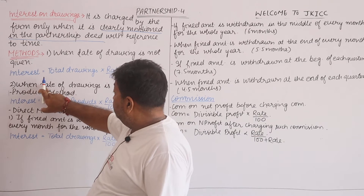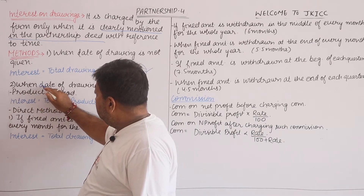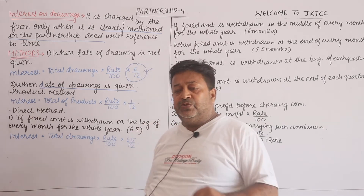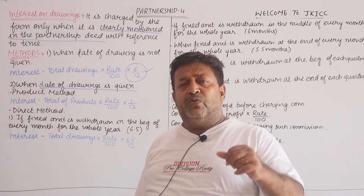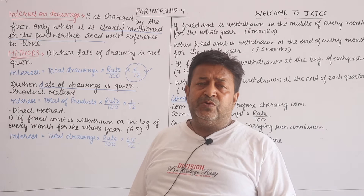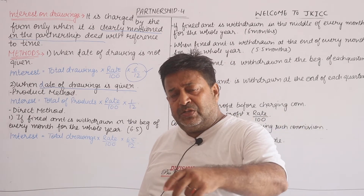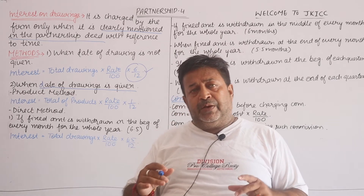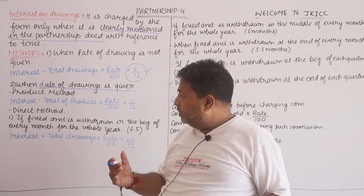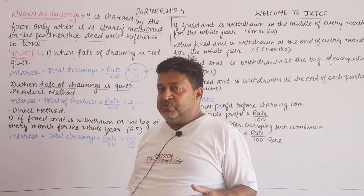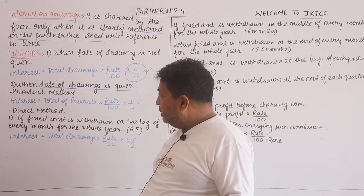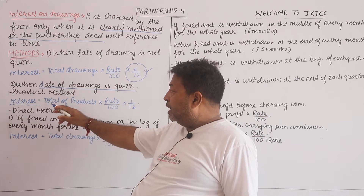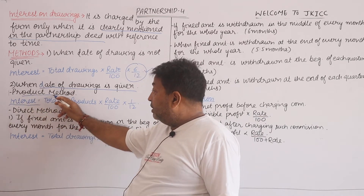When the date of drawings is given — for example, 15th June, 30th September, 15th March — different dates are given with specific amounts. In that case, we use the product method. The product method is used to calculate interest when specific dates are provided. This was the first formula, known as the product method.